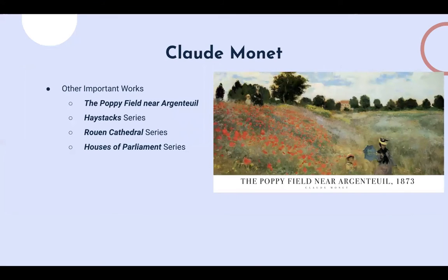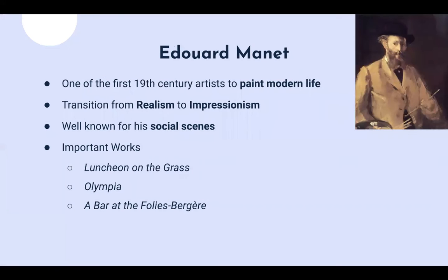Some other important works of Monet that might come up: you have the Poppy Field near Argenteuil, the Haystack series, the Rouen Cathedral series — which is just a series of paintings of the Rouen Cathedral in the city of Rouen in northern France — and then you have the Houses of Parliament, which is a series of paintings of the Parliament building in England.